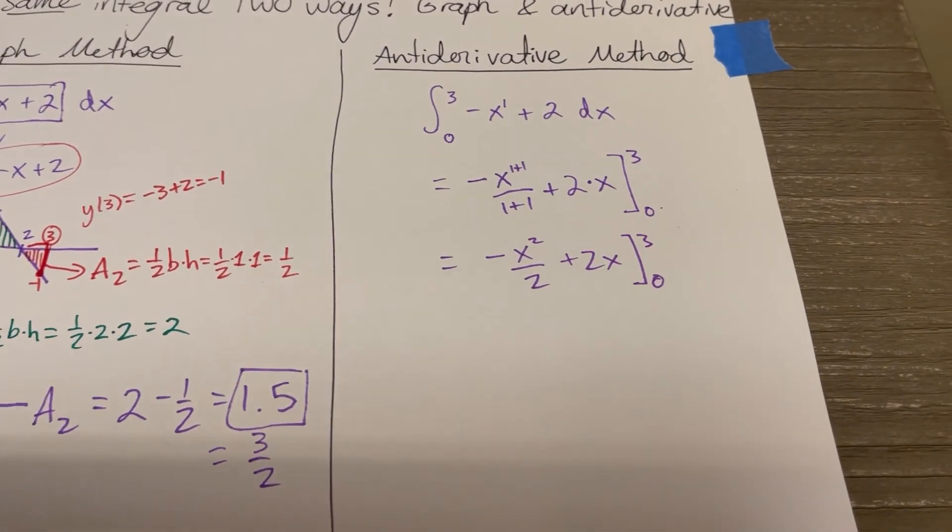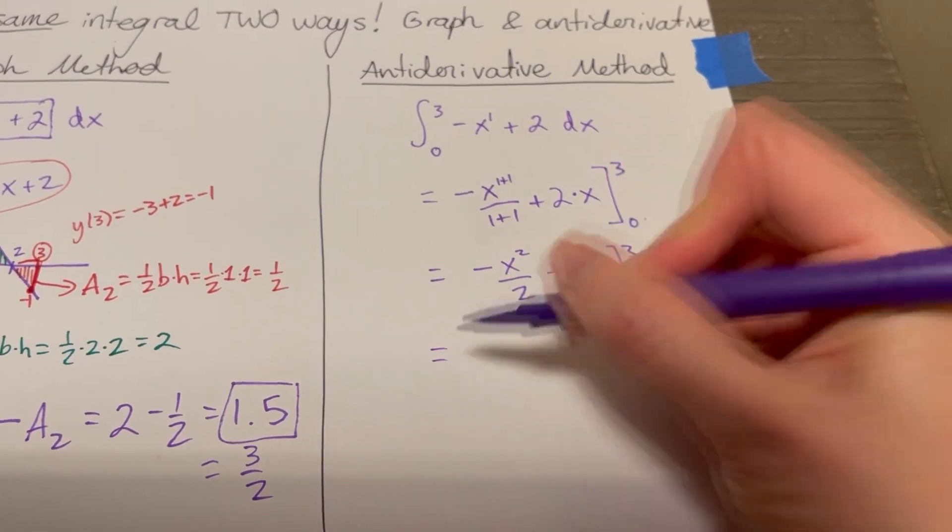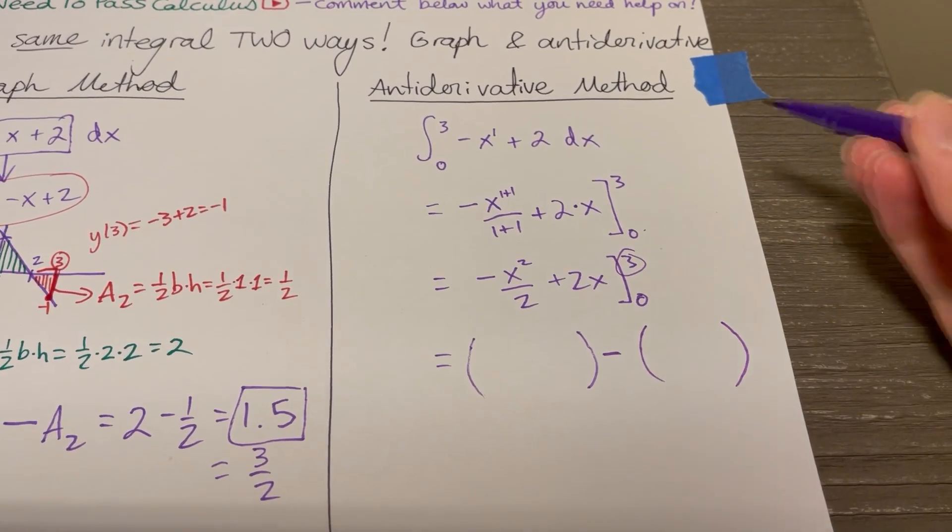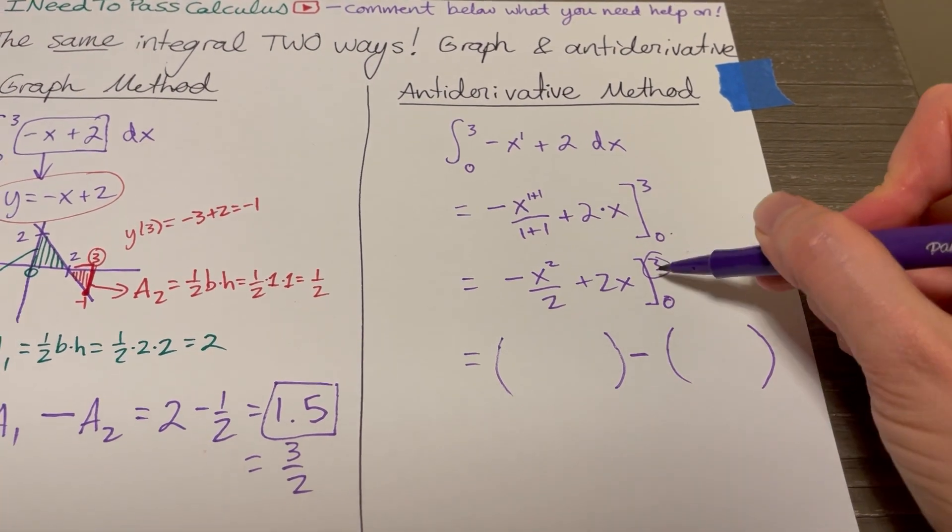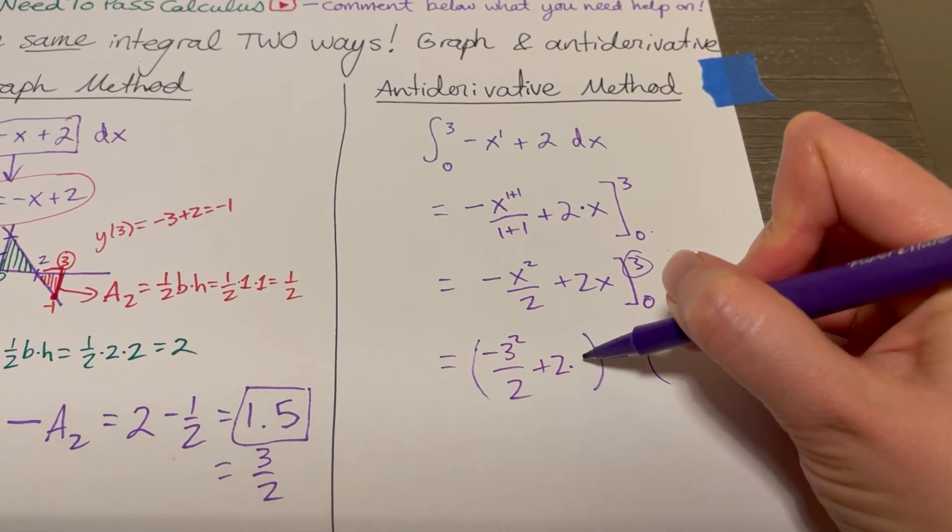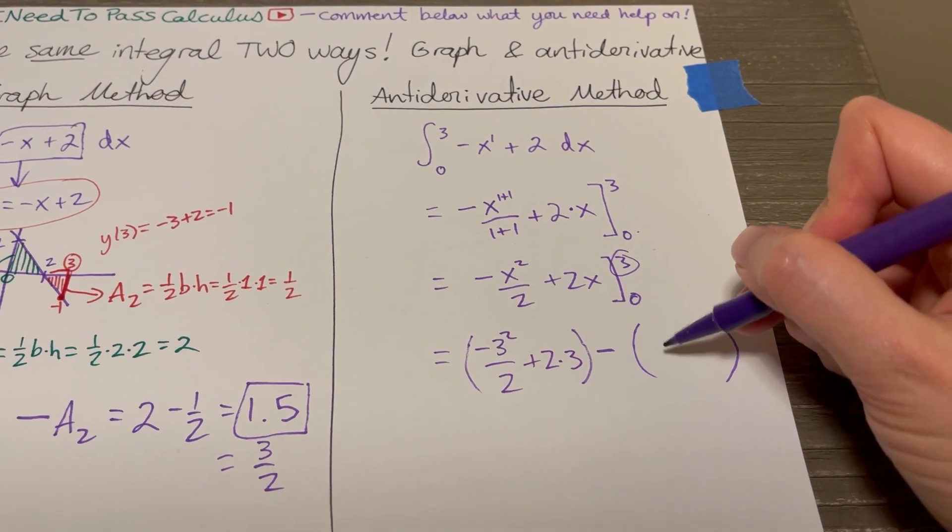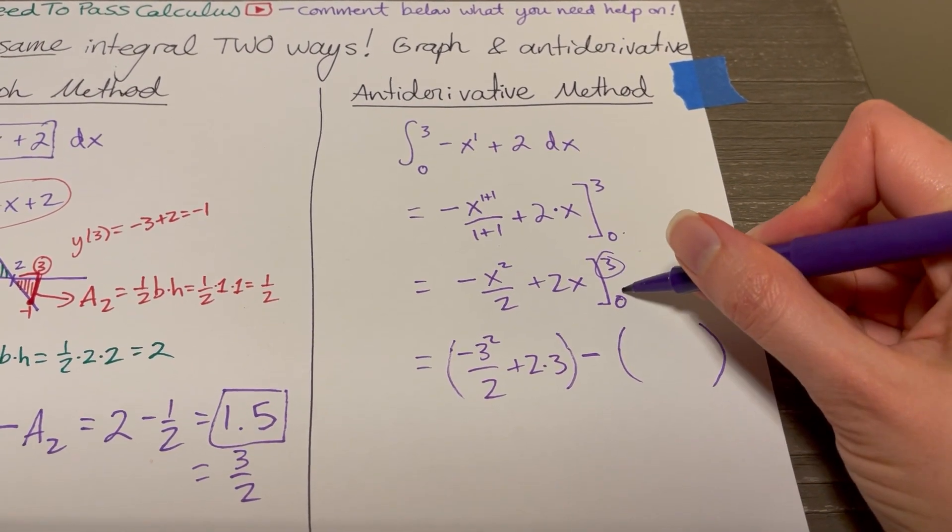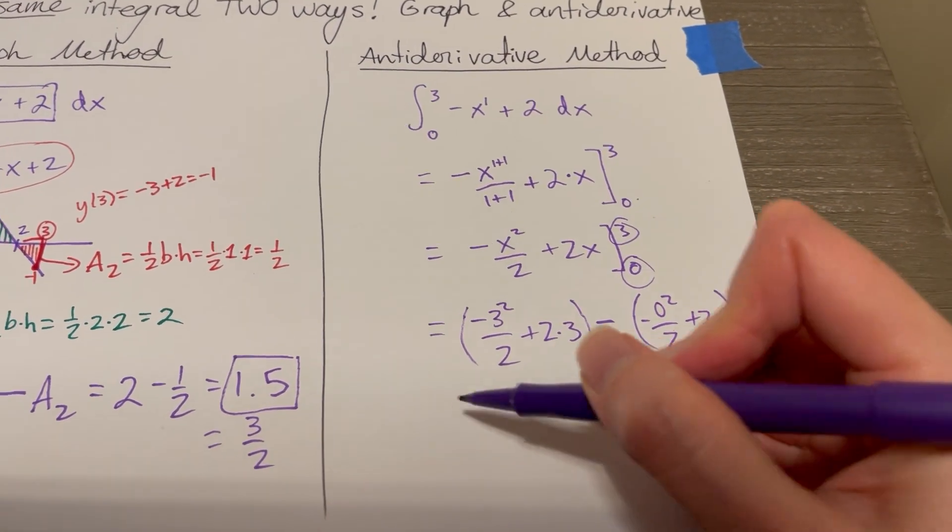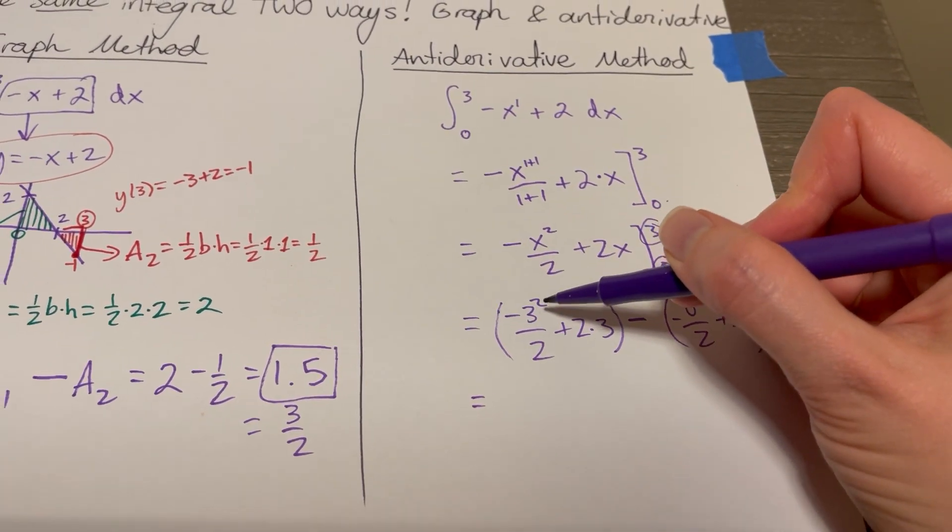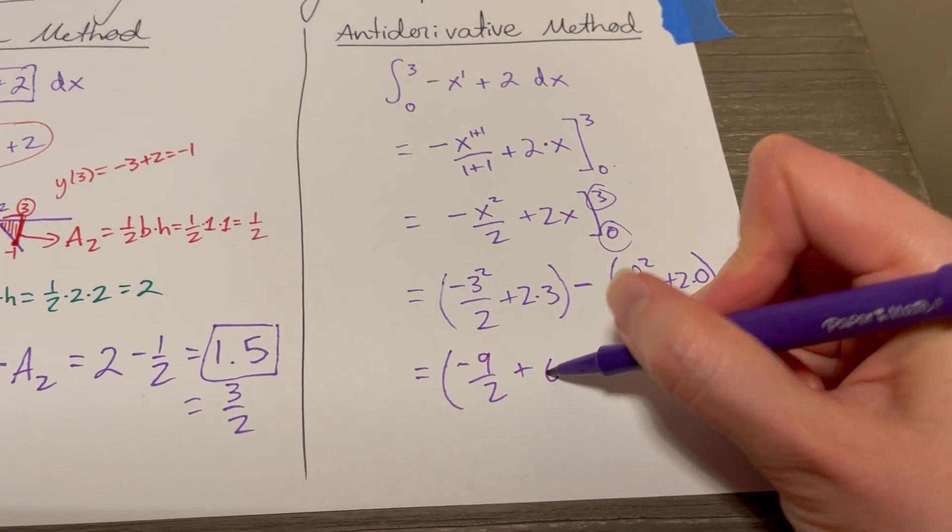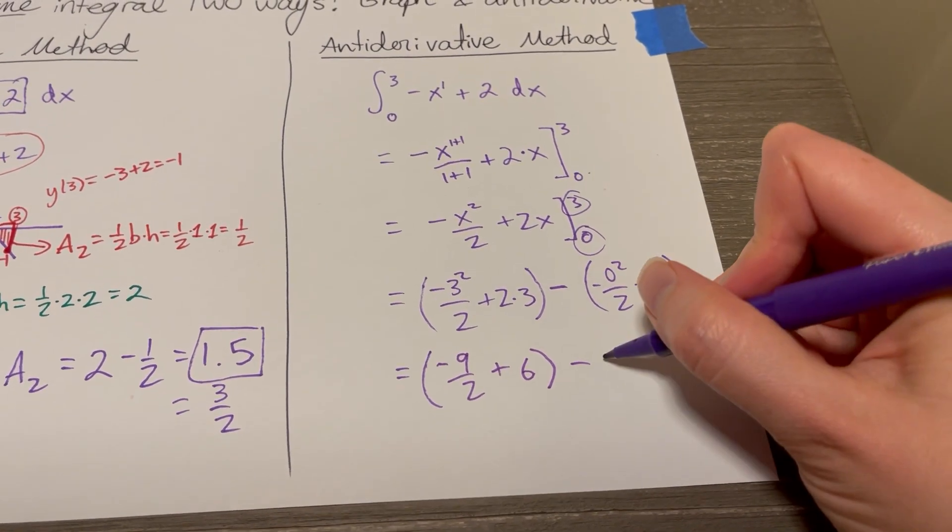Now we just use, continue using the fundamental theorem of calculus, which means we evaluate the antiderivative at the top number first minus the antiderivative with the bottom value plugged in. So first we plug in three for the x, negative three squared over two plus two times three. And then here we have, plugging in the bottom number, negative zero squared over two plus two times zero. Okay, and be careful, it's not negative three squared, it's negative three squared. So this is going to be negative nine over two plus six minus zero plus zero, so I'm going to zero.